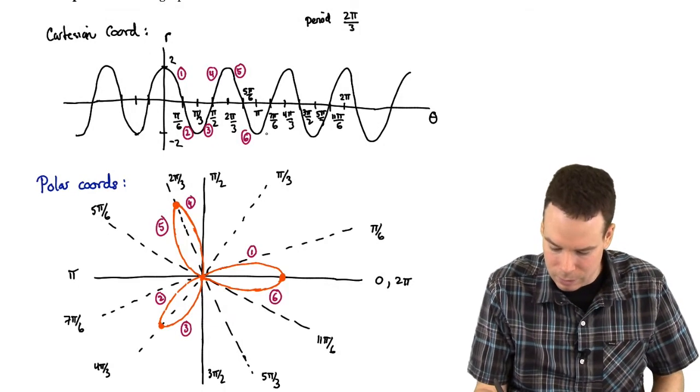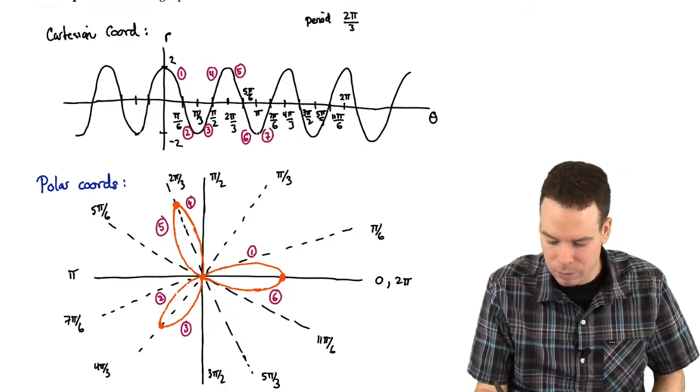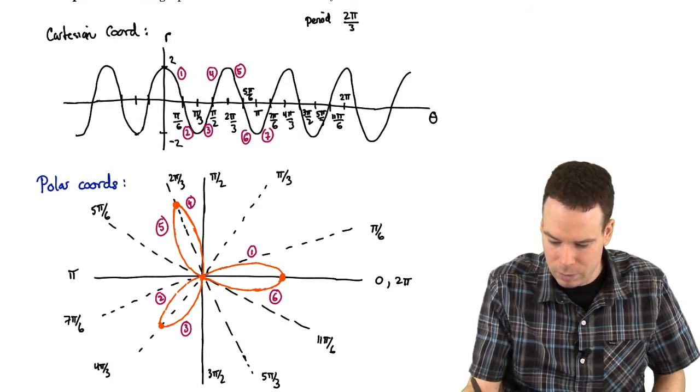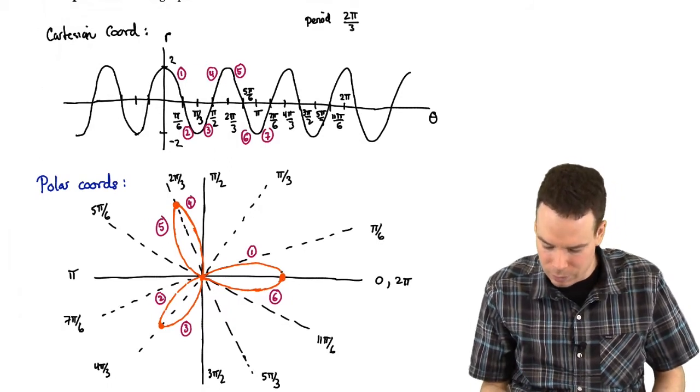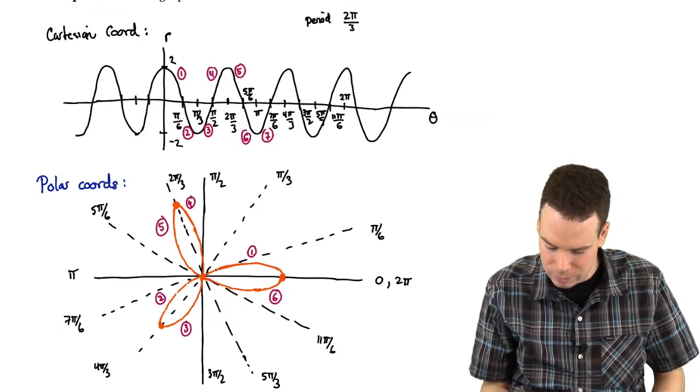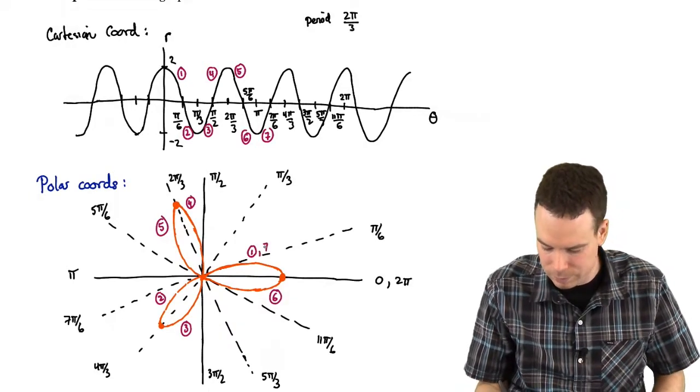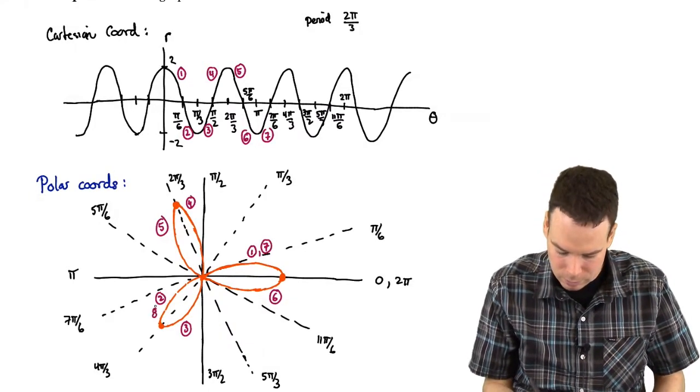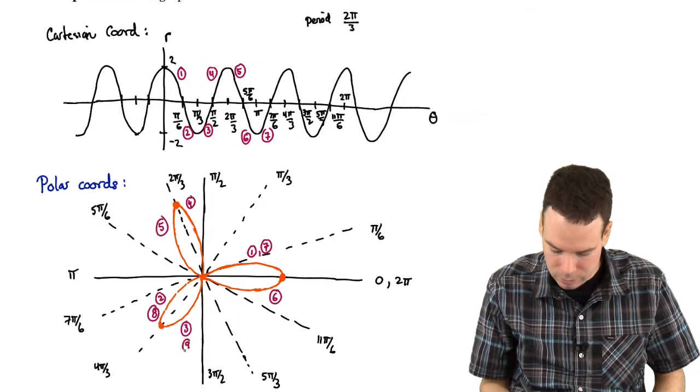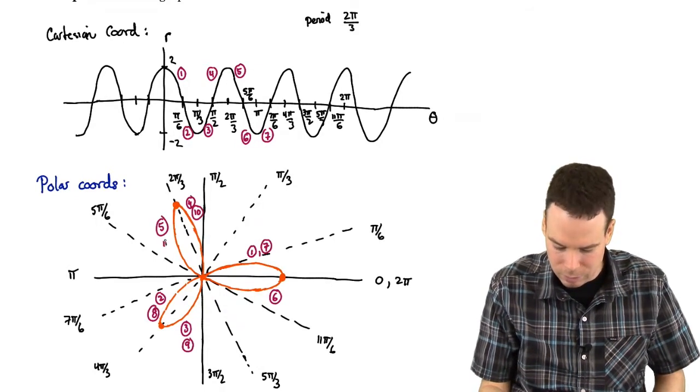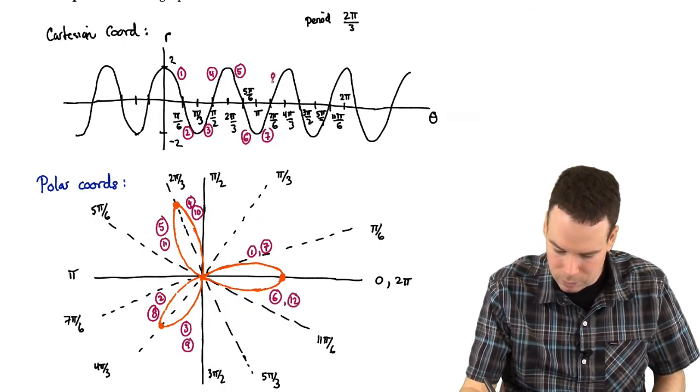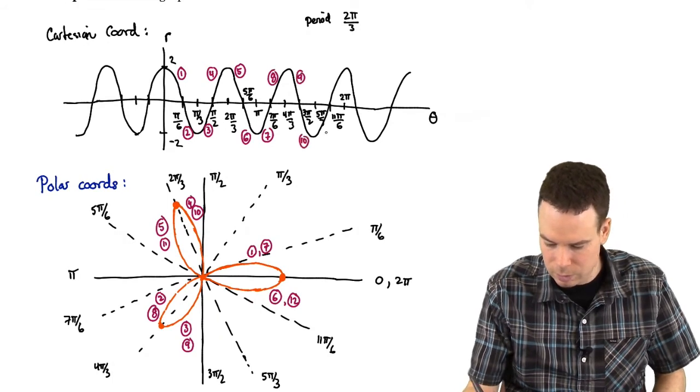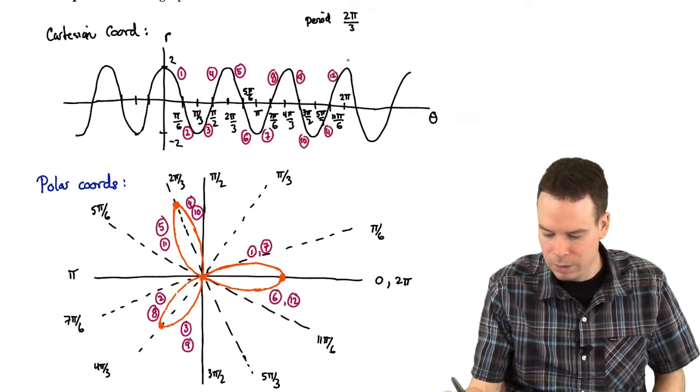And what happens next? Then we go 7. r value goes from negative 2 back to 0. But I'm already out here. As I move through these angles from π to 7π by 6, my r value is negative, so it looks like I trace out that same portion again. So it looks like this is 7. And then 8. And then 9. And then 10. It looks like I'm tracing everything out again. 11 and 12. So 7, 8, 9, 10, 11, and 12. So check that for yourself.